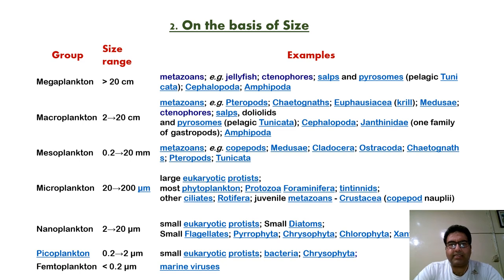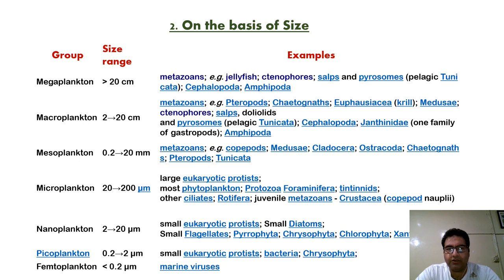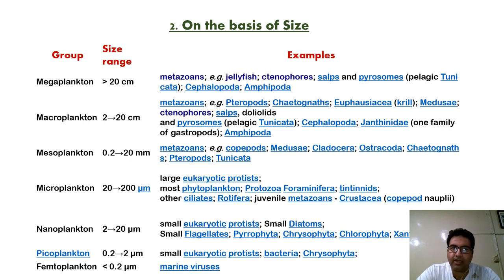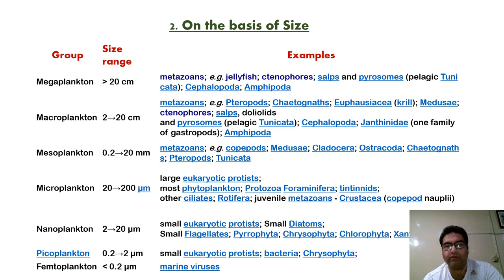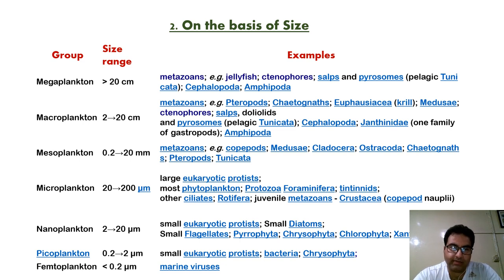When the size of the plankton is 2 to 20 centimeters, they are called as macroplankton. Certain metazoans, chaetognaths, medusae, ctenophores, salps, doliolids, pyrosomes, cephalopoda, and amphipoda come under this group. For mesoplankton, the size is 0.2 mm to 20 mm, and certain metazoans, copepods, medusae, cladocera, ostracods, chaetognaths, pteropods, and tunicates come under this category.